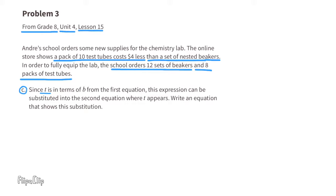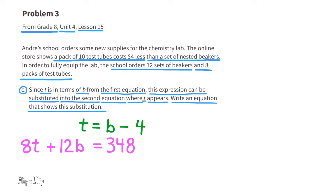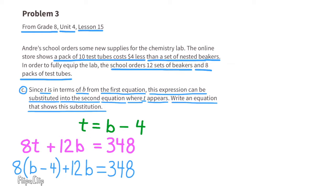Since t is in terms of b from the first equation, this expression can be substituted into the second equation where t appears. In green we have the first equation that shows the value for t: t = b − 4. We can substitute the t in the second equation with b − 4, so now it reads: 8(b − 4) + 12b = 348.